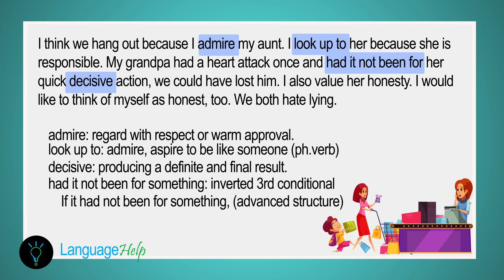'To admire' is to regard with respect or warm approval. 'To look up to someone' is another way to say admire, or to aspire to be like that someone. When an action is 'decisive,' it produces a definite or final result. 'Had it not been for someone to do something' is an inverted third conditional structure — this is an advanced form you can use in your speech to show variety in grammatical structures. The simpler way is to say 'if it had not been for someone to do something' and finish the sentence.